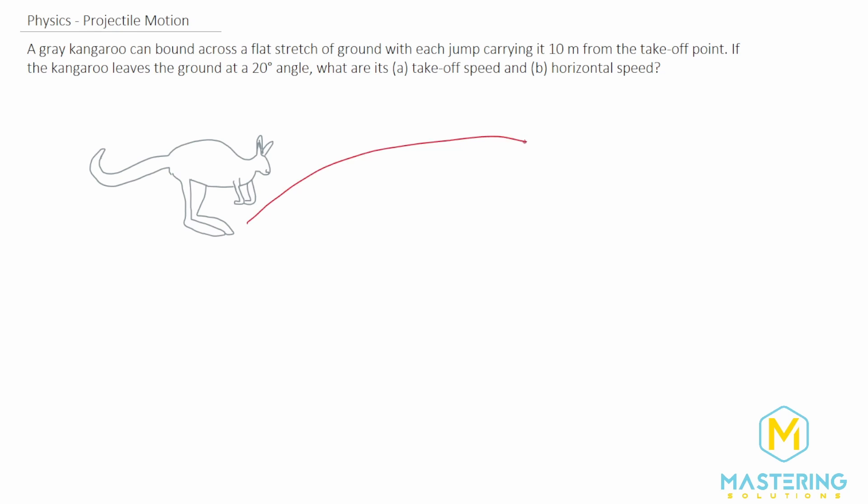So if we draw an arc here, this represents this jump, and this distance is 10 meters, and this jump right here is 20 degrees. So we'll draw a velocity vector to represent the initial velocity, and this angle from the ground they say is 20 degrees.